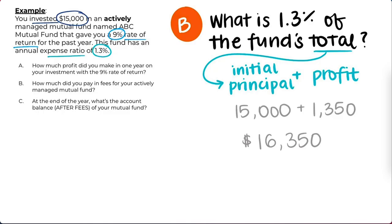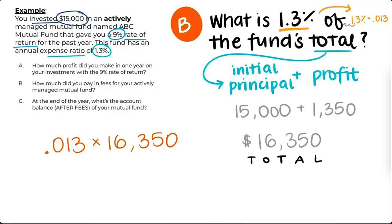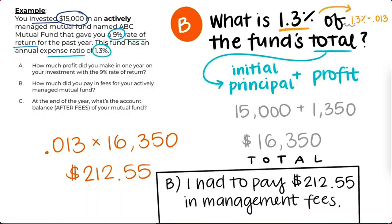The expense ratio of 1.3% is then applied to the fund's total amount. This means we calculate 1.3% of $16,350. 1.3% as a decimal is .013, which when multiplied by $16,350 equals $212.55. This means we have to pay $212.55 in management fees alone.